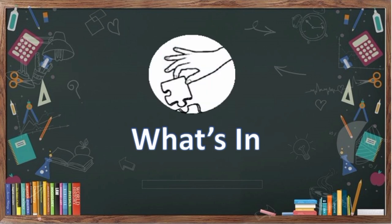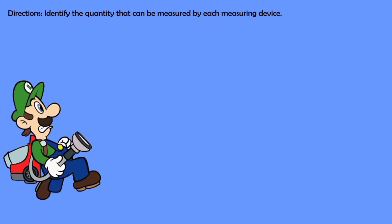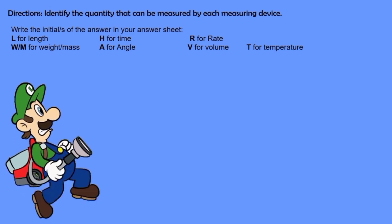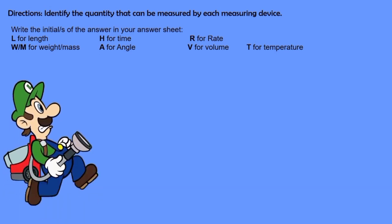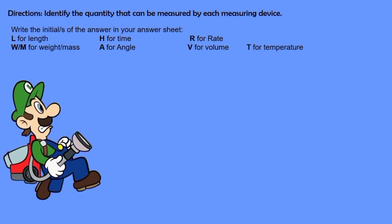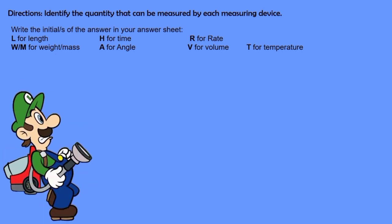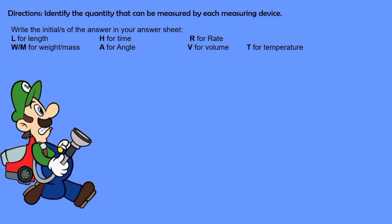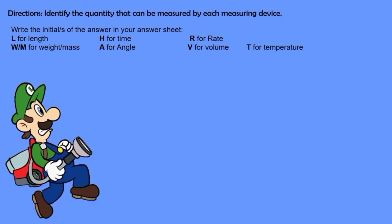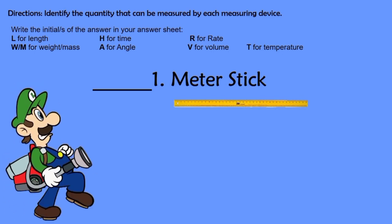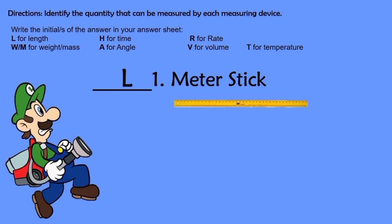What's In. Identify the quantity that can be measured by each measuring device. Write the initial or initials of the answer in your answer sheet: L for length, W or M for weight or mass, H for time, A for angle, R for rate, V for volume, and T for temperature. Now let's identify number 1 — Meter stake. The answer is length.